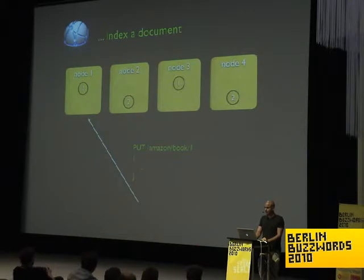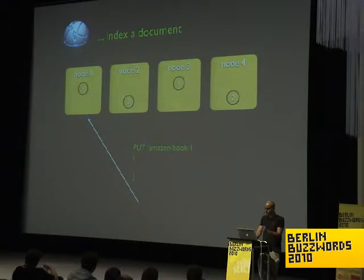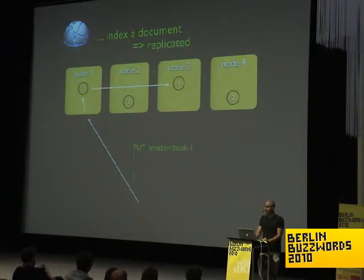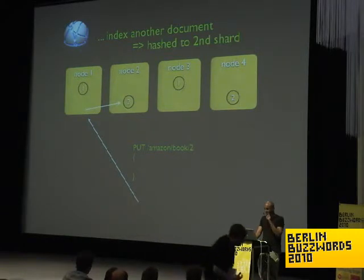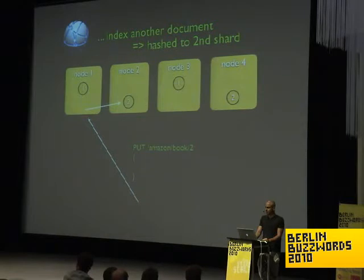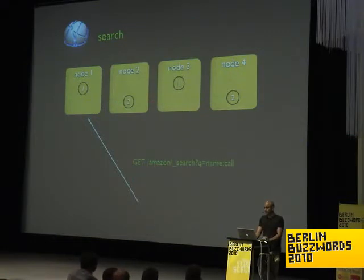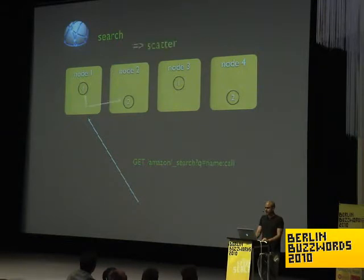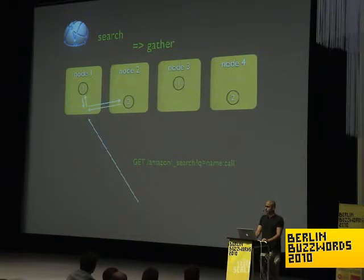If you fire up two more nodes, they automatically get reallocated so we have an evenly balanced number of shards, churning as much as we can out of the machines. When indexing a document with ID 1 it gets hashed to the first shard automatically by Elasticsearch and replicated to all other replicas. If indexing another document with ID 2, the node automatically reroutes that request to the node that has the specific shard needed. For a search query, it gets scattered into the relevant shards, reduced back, and we get the result.